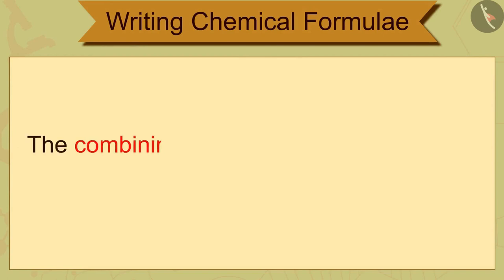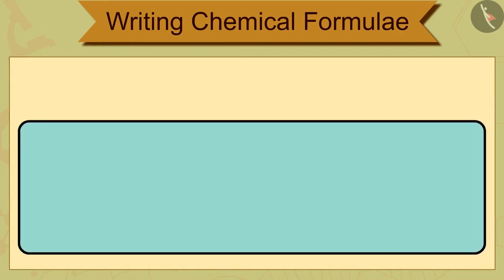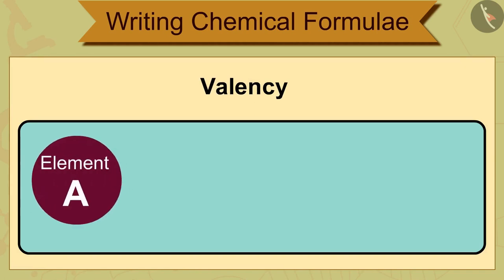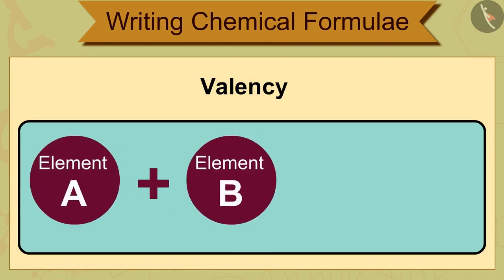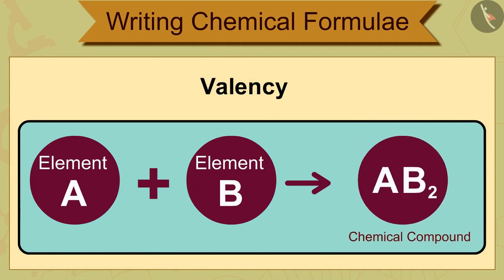The combining power or capacity of an element is known as its valency. Valency can be used to find out how the atoms of an element will combine with the atoms of another element to form a chemical compound.